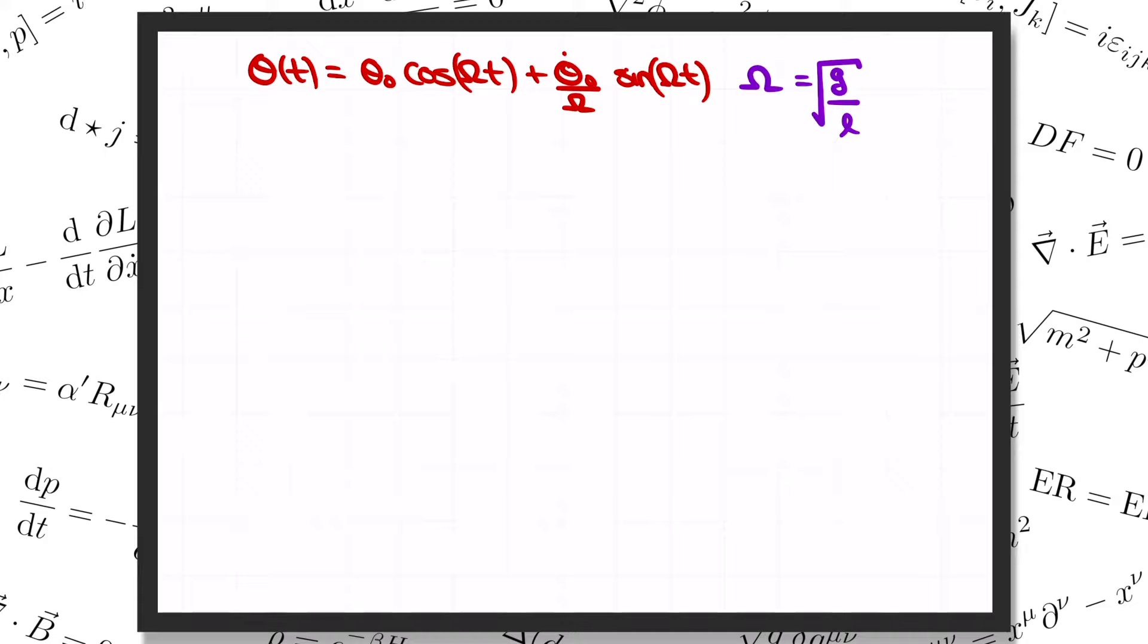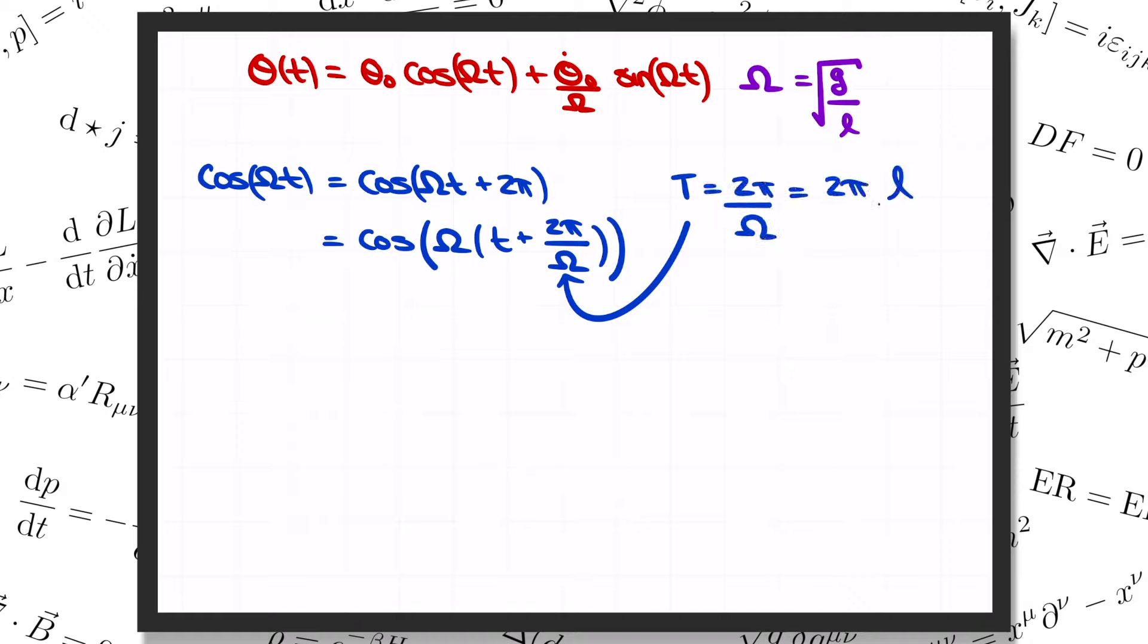The time it takes the pendulum to complete one full oscillation is called the period capital T, not to be confused with the tension. Cosine and sine complete a full oscillation when their arguments increase by 2pi. So, for example, cosine of omega t is the same as cosine of omega t plus 2pi. Alternatively, we can express the right-hand side here as cosine of omega times the quantity t plus 2pi over omega. So the pendulum comes back to its starting configuration after time big T equals 2pi divided by omega has elapsed, or 2pi square root of l over g.